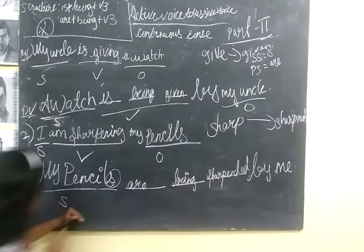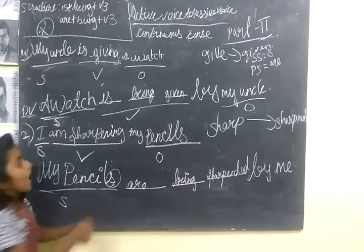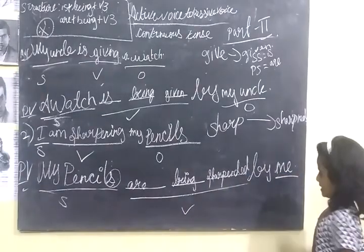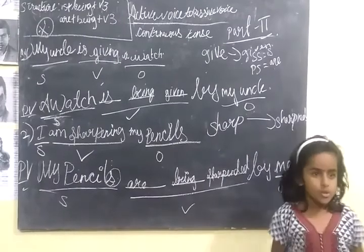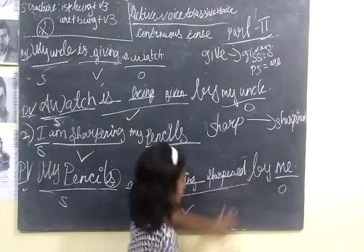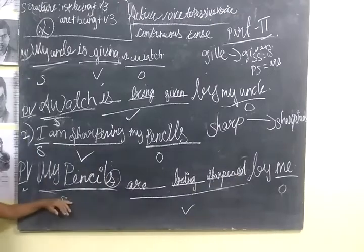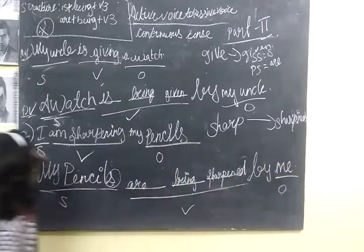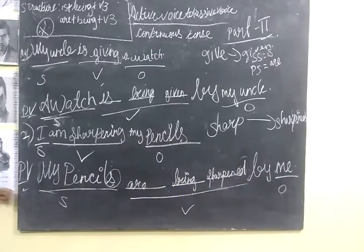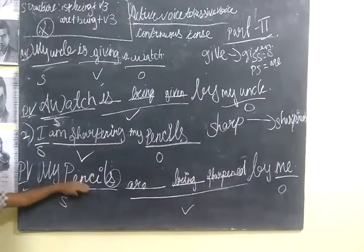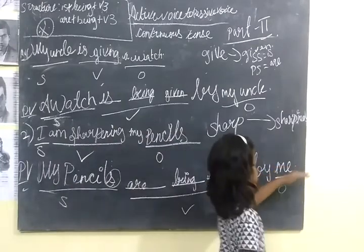So in this, 'my pencils' is the subject, and the active verb becomes a past participle, and 'me' is the object. I will read the answers. The first answer: 'A watch is being given by my uncle.' The second one: 'My pencils are being sharpened by me.' Thank you.